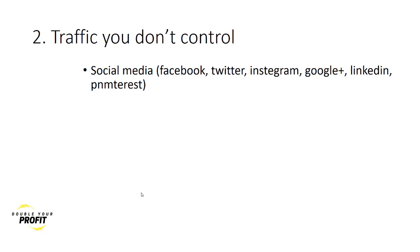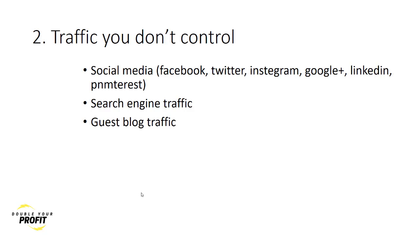The second type of traffic is the traffic you don't control. These are like social media platforms - Facebook pages, Twitter, Instagram, Google Plus, LinkedIn, or Pinterest. These are good traffic sources and you might get people coming to your website here and there, but this is not sustainable and it's not scalable. You can't control that traffic, and that's the problem.